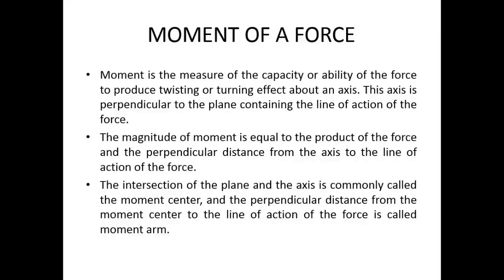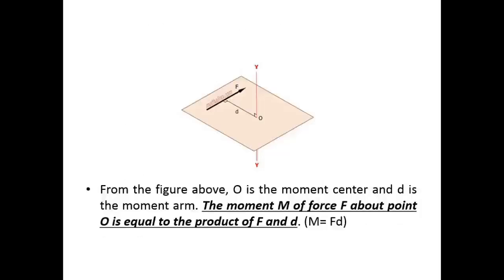Before going into the details of rolling resistance, we need to understand the moment of force. Moment is the measure of the capacity or ability of a force to produce a twisting or turning effect about an axis. The magnitude of the moment is equal to the product of the force and the perpendicular distance from the axis to the line of action of the force. The intersection of the plane and the axis is called the moment center, and the perpendicular distance from the moment center to the line of action of force is called the moment arm. The moment M of force F about point O is equal to the product of F and D, where D is the distance and F is the force.